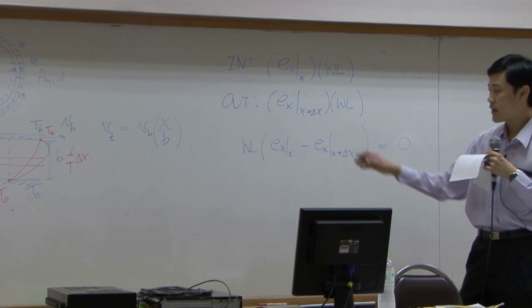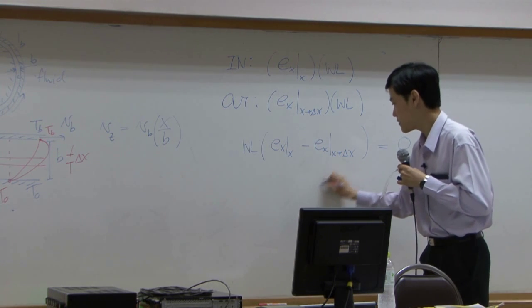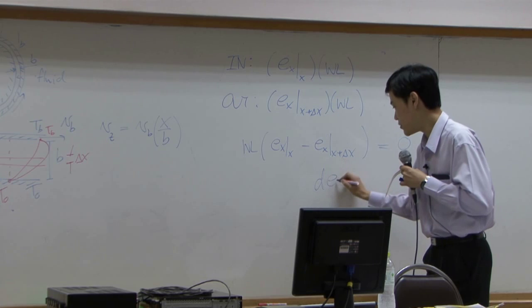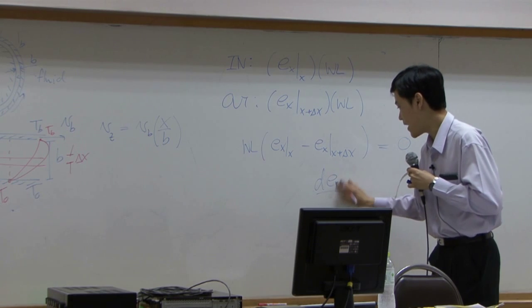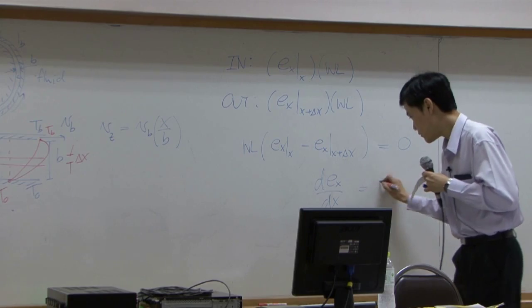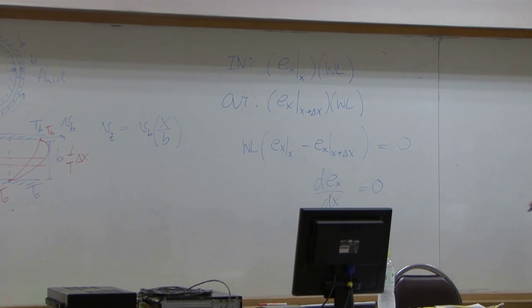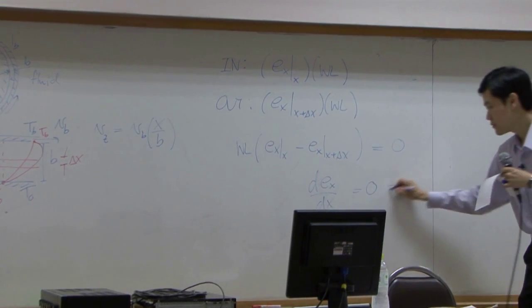If you multiply by wl delta x, take a limit, you end up with differential equation, d of ex by dx equal to zero, or ex equal to a constant.